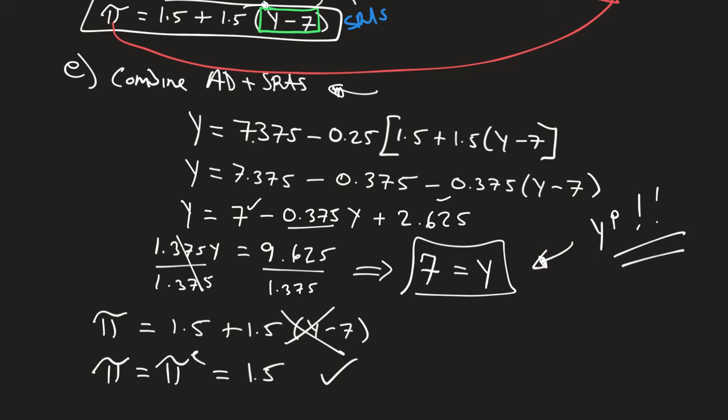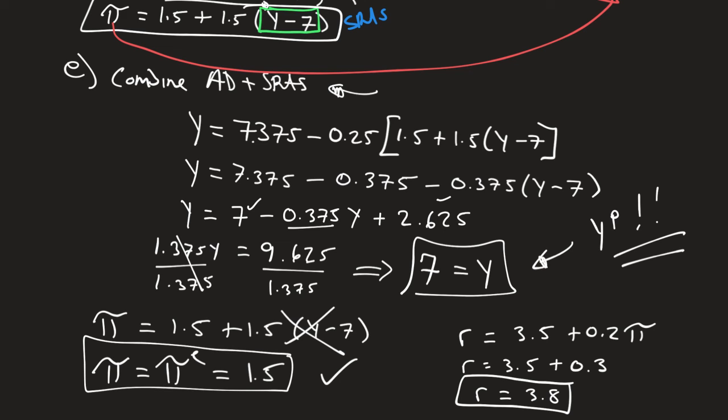Now, what if I want to know about my interest rate? Well, I have my MP curve from before. R equals 3.5 plus 0.2 times pi. Well, if I know that inflation is equal to 1.5, if I multiply that by 0.2, I'm going to get 0.3. So therefore, R is equal to 3.8. So I've solved for this general equilibrium. I've solved for this general equilibrium where output is equal to 7, interest rates are equal to 3.8, and the inflation rate is equal to 1.5.